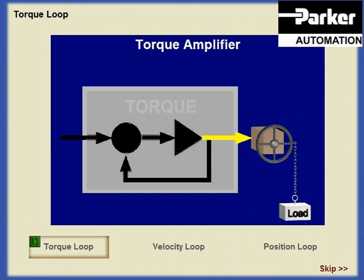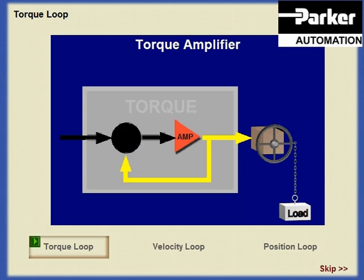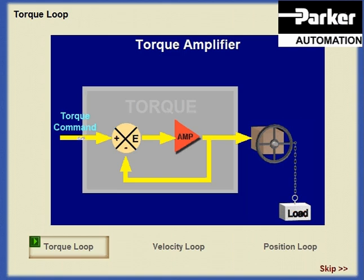Assume that motor torque is proportional to motor current. Consequently, the motor torque feedback signal can be derived from the amplifier output current level. The control circuit subtracts this motor output torque signal from the input command at the summing junction. The result is the error signal, which is fed to the amplifier. This configuration may be thought of as a current amplifier.